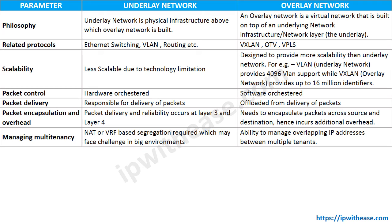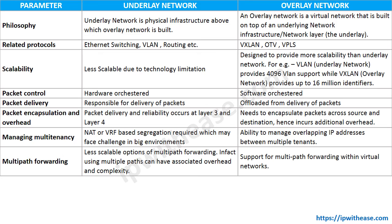Next is managing multi-tenancy. When underlay networks face multi-tenancy requirements, they perform NAT or VRF-based segregation. Overlay networks, however, have the innate feature set to manage overlapping IP addresses between multiple tenants. For multipath forwarding: it is possible with the underlay but is less scalable and involves overhead and complexity. For overlay networks, multipath forwarding within the virtual network is an inherent trait and can be performed efficiently.